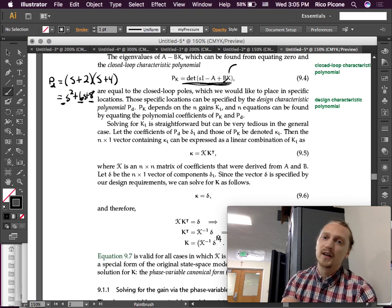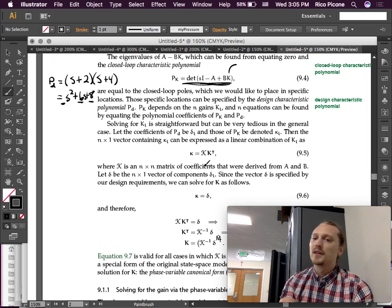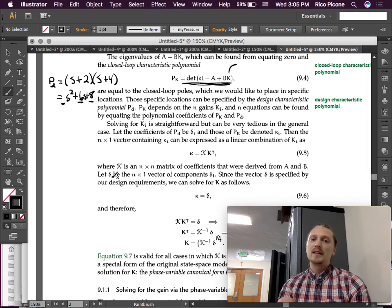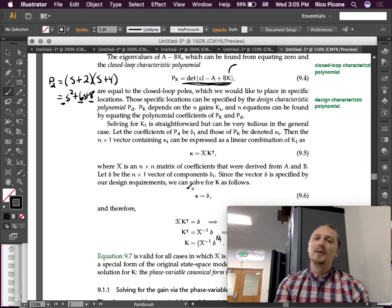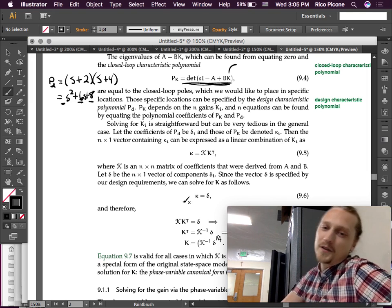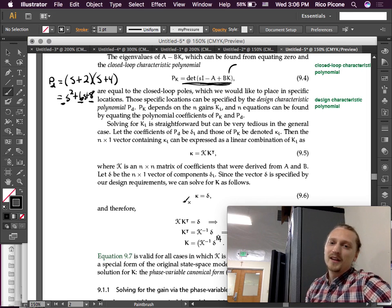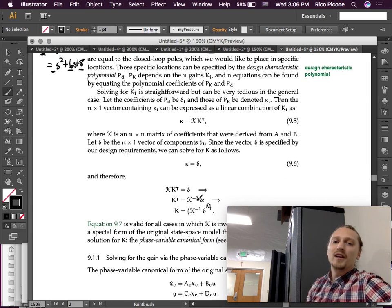Let the coefficients of P_D be delta_i, and those of P_K be denoted kappa_i. Then the n by 1 vector containing kappa_i can be expressed as a linear combination of k_i. Where script K is an n by n matrix of coefficients that were derived from A and B. Let delta be the n by 1 vector of components delta_i. Since the vector delta is specified by our design requirements, we can solve for k as follows.